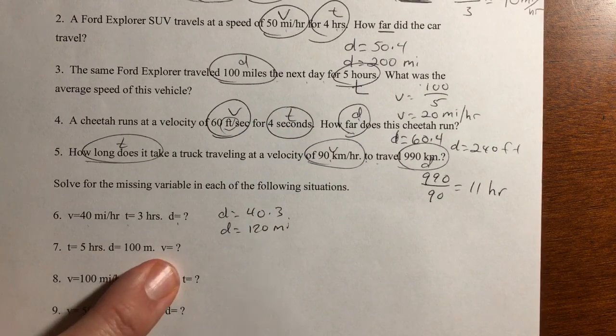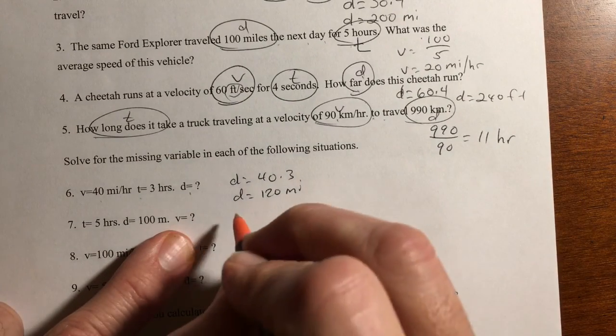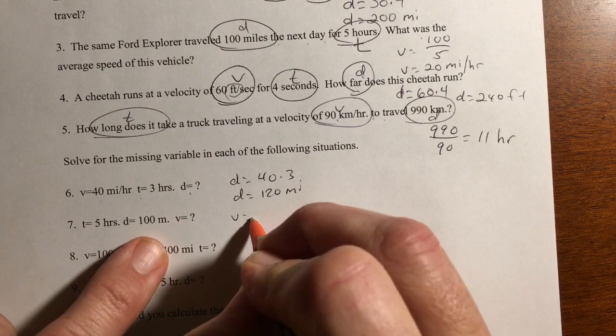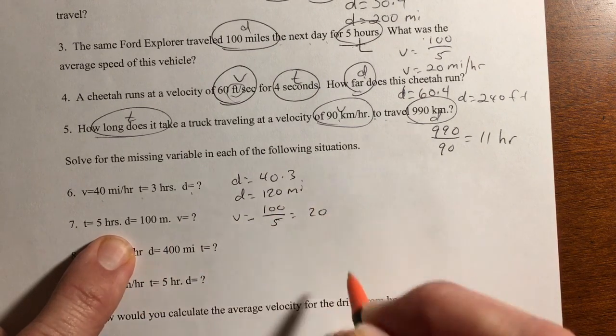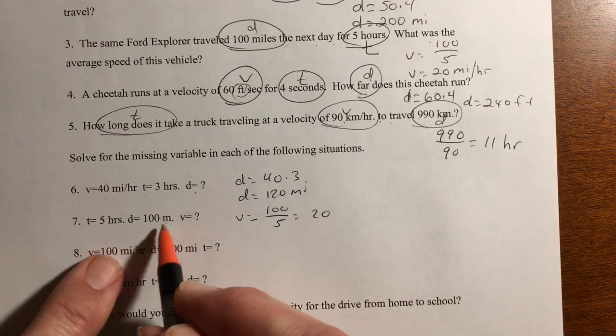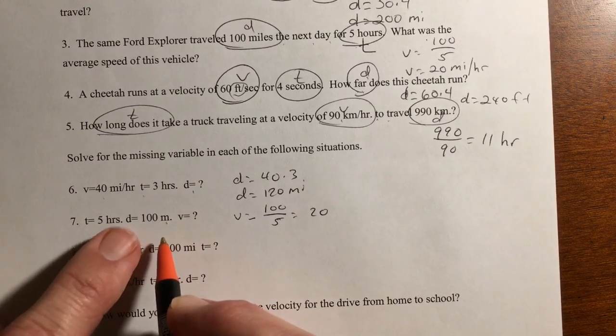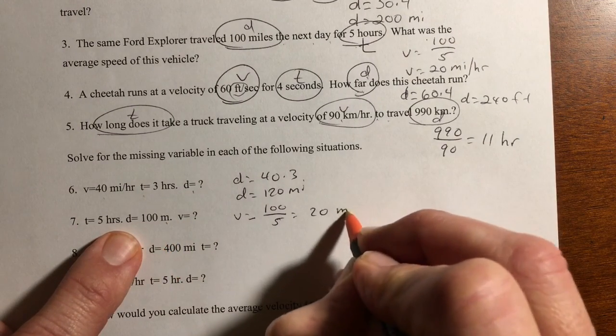Number seven. We're finding V again. D divided by T. So it's going to be V equals 100 divided by 5. That's 20. And this is going to be miles per hour.